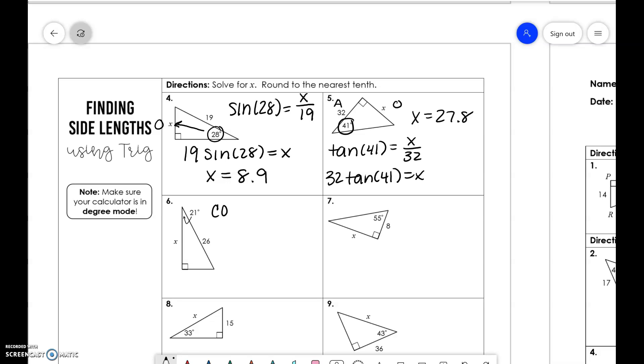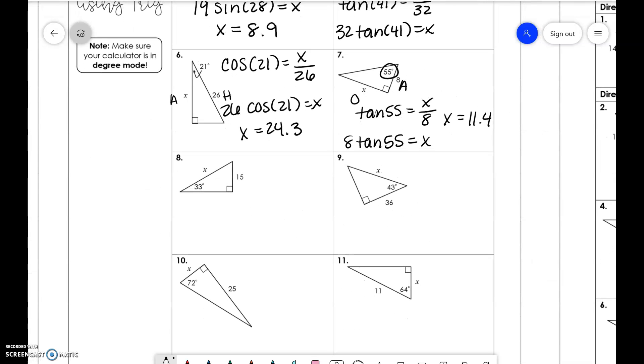This one is adjacent and hypotenuse. So cosine of 21 is equal to x over 26. For this, we have opposite and adjacent. So tangent of 55 is equal to x over 8.